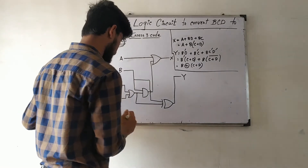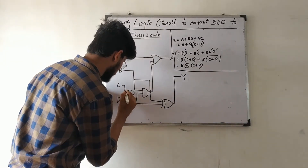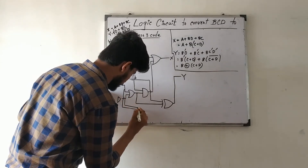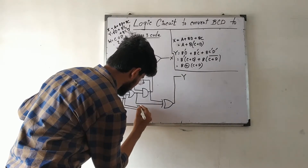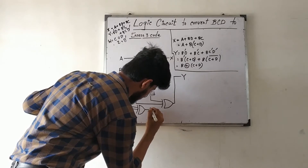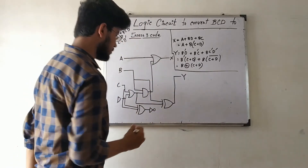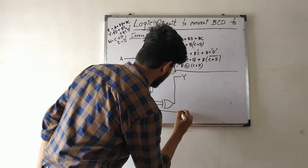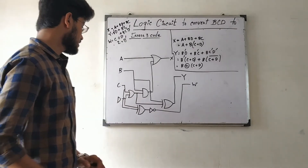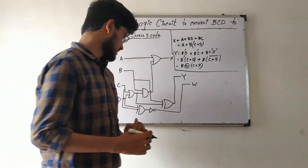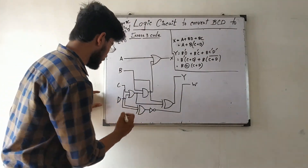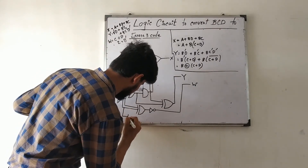For W = C XNOR D: we take inputs C and D and connect them to an XNOR gate to produce output W.